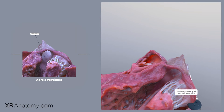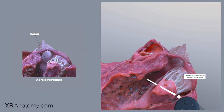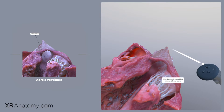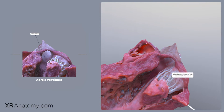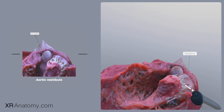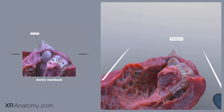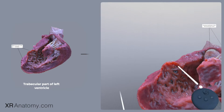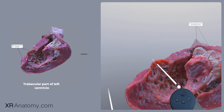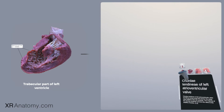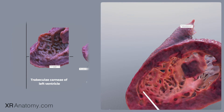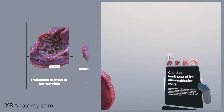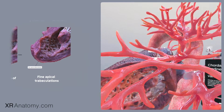The left ventricle's inlet and outlet arrangements differ from those of the right ventricle. The outlet of the left ventricle directly overlaps its inlet, creating a distinctive structural configuration where the exit path for blood covers the entrance path. Upon further examination, towards the apex, a complex network of thin muscle bundles can be observed, known as trabeculations or trabeculae carneae.